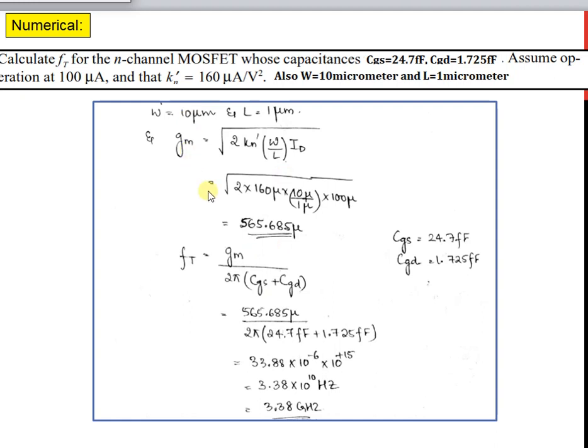gm equals the square root of 2 times k prime times W by L times ID. Substituting gives a transconductance value of 565.685 micro. Substituting the value of gm and the other parameters into the unity gain frequency equation yields FT equals 3.38 gigahertz.